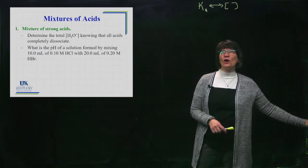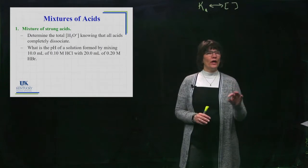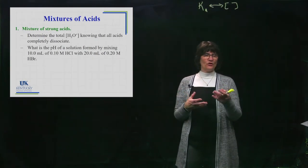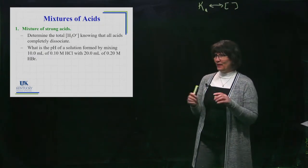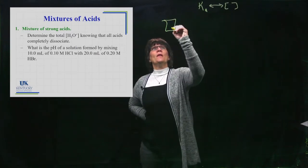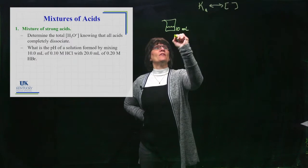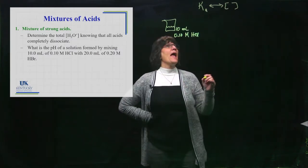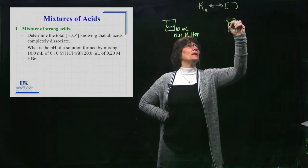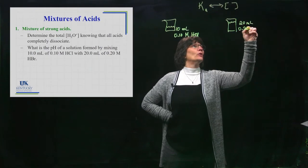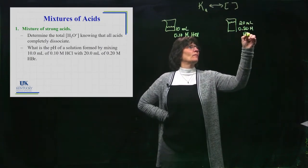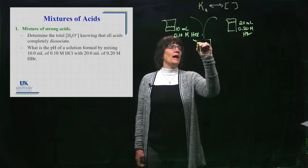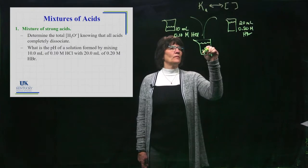We're going to start with a mixture of strong acids. We know that when we mix strong acids they both 100% ionize, and the concentration of the H3O plus is the concentration of the acid. I'm going to take a beaker with 10 milliliters of 0.10 molar HCl, that's a strong acid. Then I have another beaker with 20 milliliters of 0.2 molar HBr, that's a strong acid, and I dump them together into a bigger beaker. Now in this beaker, I want to know the pH.